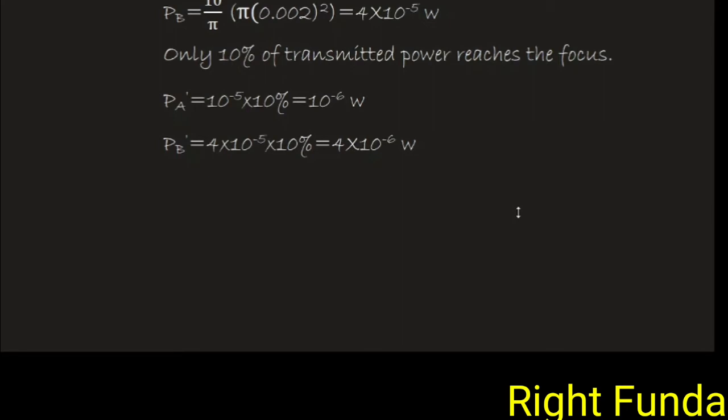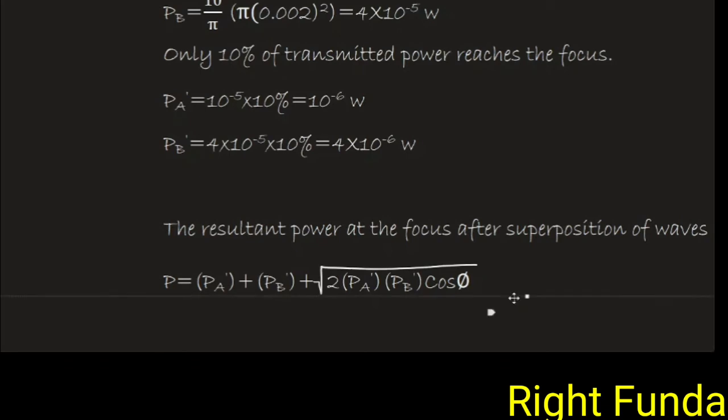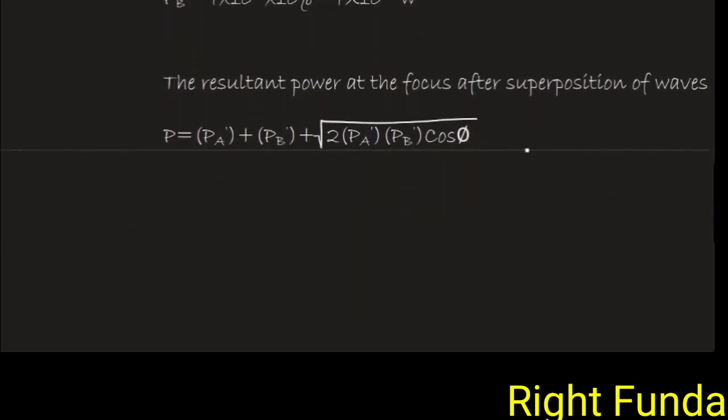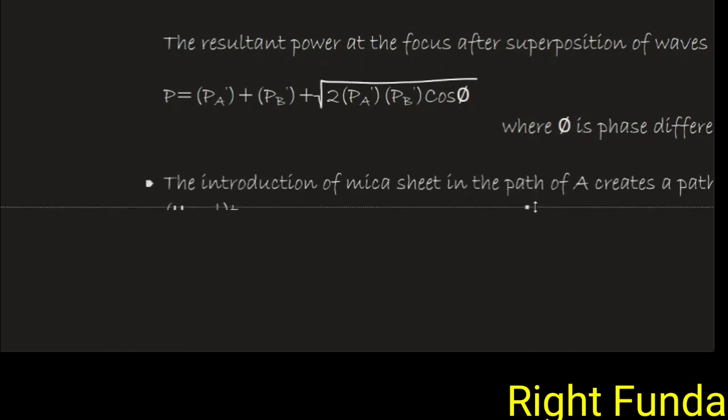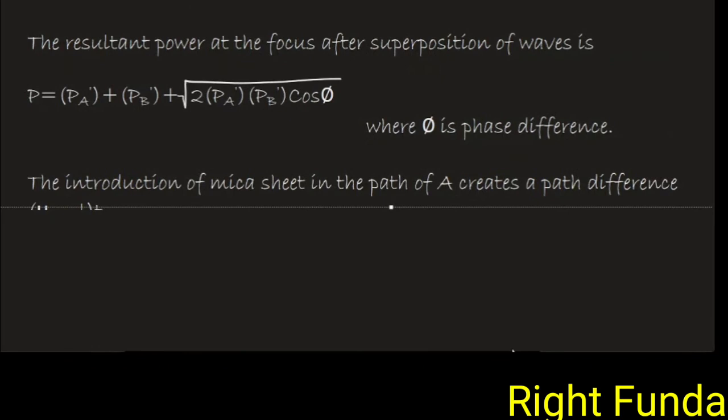These are the two intensities or powers. The resultant power formula, what we usually use for intensity is I equals I1 plus I2 plus 2 root I1 I2 cos phi. That is actually for energy, from energy conservation, or for power, energy per second. But when the areas are same, we apply for intensity also. But here we will apply the actual formula. So the net resultant power will be PA dash plus PB dash plus 2 root PA dash PB dash cos phi, where phi is the phase difference between the two rays.